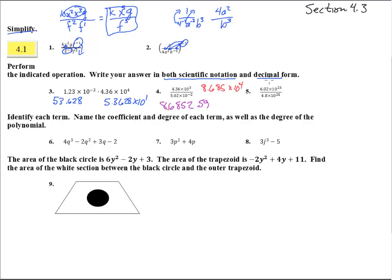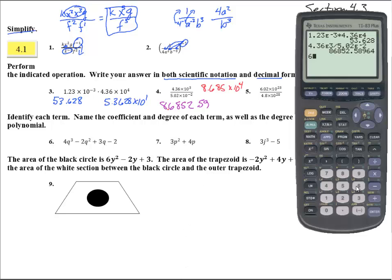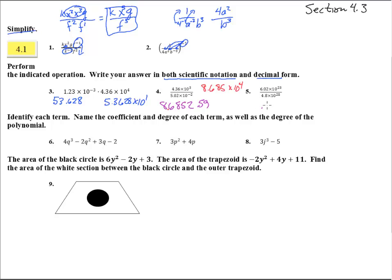The last scientific notation problem: 6.02 times 10 to the 23rd power — that's a huge number — divided by 4.8 times 10 to the 25th power. We get 0.0125. We write that in decimal form as 0.0125. For scientific notation, we move the decimal 1, 2 places, so that's 1.25 times 10 to the negative 2 power.